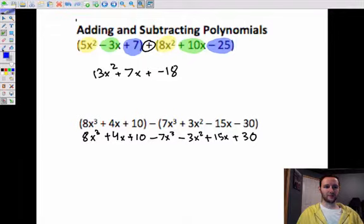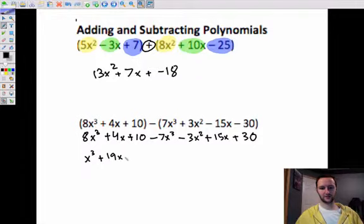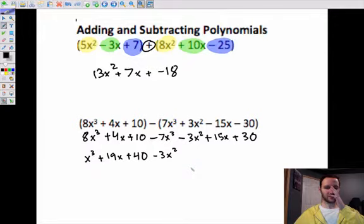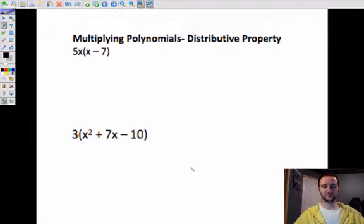Now you can combine all the like terms. So 8x to the third and negative 7x to the third, that makes just 1x to the third. A 4x and then later a 15x, that makes 19x. A 10 and then later a 30, that makes 40. And then the only other term that's left is this negative 3x squared, and that's the only x squared term, so there's nothing to combine it with.